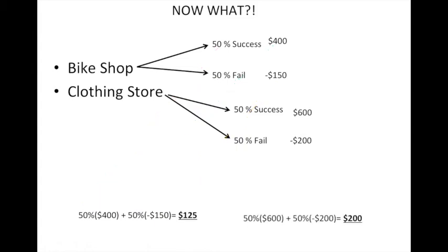For the clothing store: 50% times $600 plus 50% times -$200 equals $200. So the bike shop has an expected value of $125, and the clothing store has an expected value of $200. These are known as the expected values of the project.